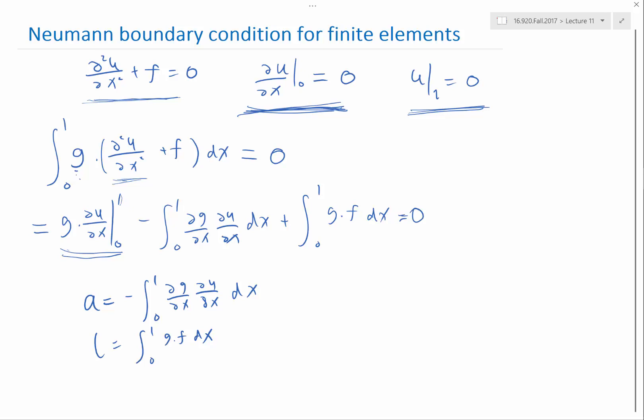So something must have changed that we might have missed. So what's the difference between this weak form, a of u g plus l g equal to 0 for the 0 Neumann boundary condition, as opposed to the same weak form for the 0 Dirichlet boundary condition?